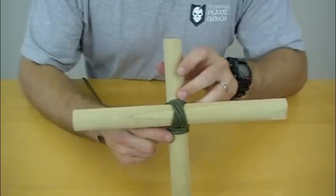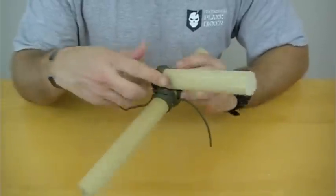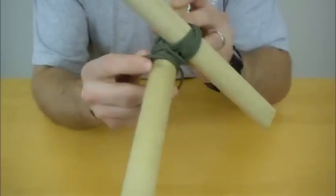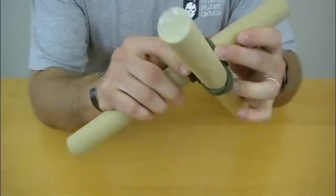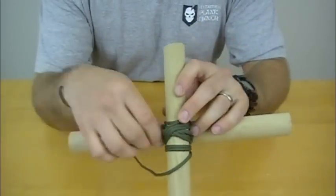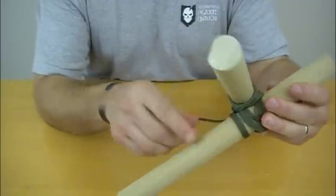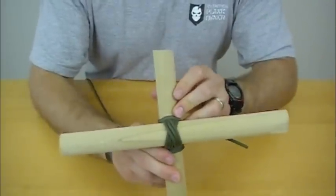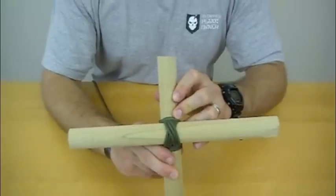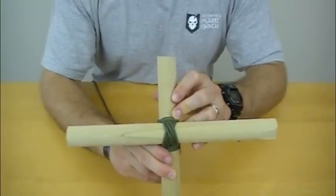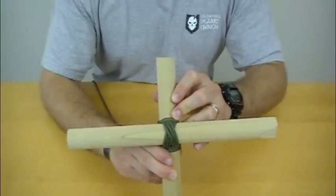So there you have it, the diagonal lashing. One more tip: you can definitely cut off the slack you have in the front and back here and tuck those ends in. You don't have to leave this hanging out. But there you have a diagonal hitch with ITS Tactical's Knot of the Week. Be sure to let us know if you have any questions and post them in the comments. Thanks for watching.